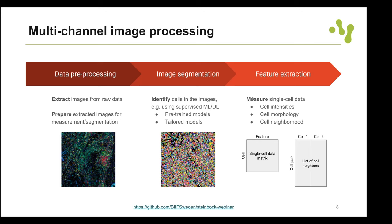Currently Steinbock can only pre-process IMC images. If you have another modality, this is not yet implemented, but since Steinbock is modular, as long as you have multi-channel TIFF files you can just start from an image folder — provide the TIFF files instead — and continue with the process. Some metadata is also generated, giving extra information about what the images contain: for example, 600×600 pixels with 40 channels.